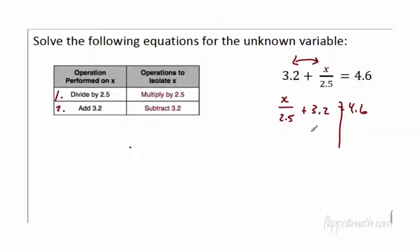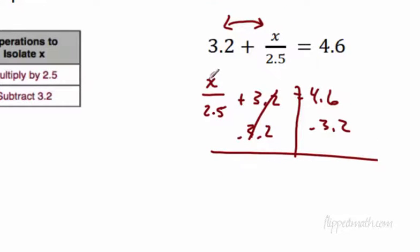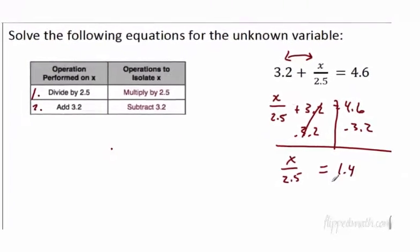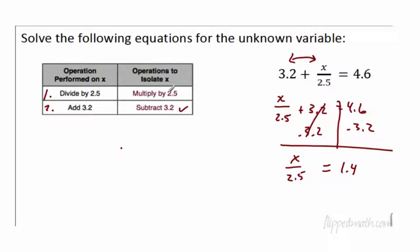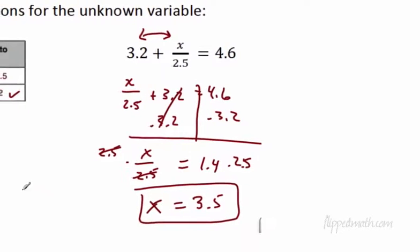A line goes down the equal sign. We subtract 3.2 from each side. Reading left to right, x over 2.5 comes down. The 3.2 and negative 3.2 cancel. The equal sign comes down, and we have 4.6 minus 3.2, which is 1.4. Now we multiply each side by 2.5 — this becomes a one-step equation, just like the ones we solved before. They cancel, and x equals 3.5.